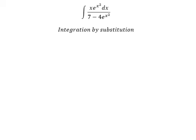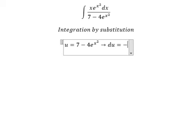So we will put u equals to this one in here. Later we do the first derivative, so du equals negative 8x e to the power of x squared dx.